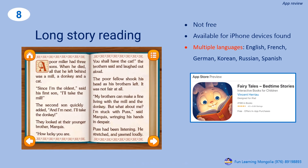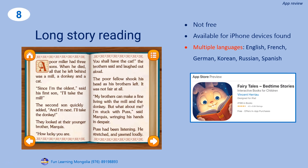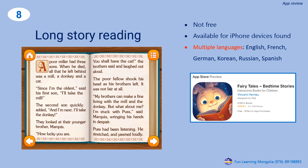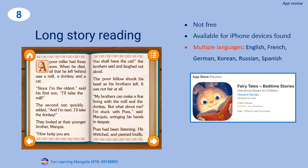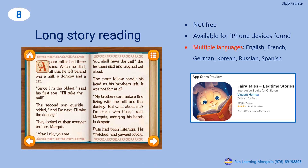A poor miller had three sons. When he died, all that he left behind was a mill, a donkey, and a cat.